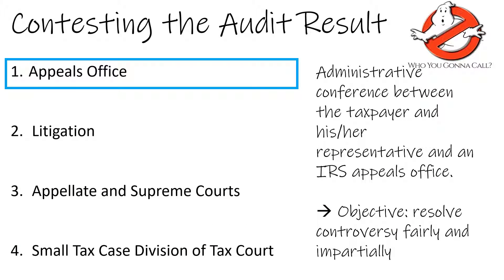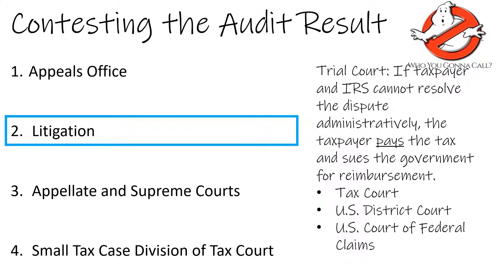So what happens if, after an audit, the taxpayer still disagrees with the IRS's judgment? The taxpayer has a number of appeals, the first of which is the IRS appeals office. When a taxpayer appeals to the IRS, this triggers a conference between the taxpayer and the IRS office. The objective of this appeal is to resolve the tax controversy fairly and impartially. If the taxpayer still disagrees with the finding, he can pay the tax and sue the government for reimbursement of the claim. The taxpayer has three different options for disputing a tax claim by the IRS.